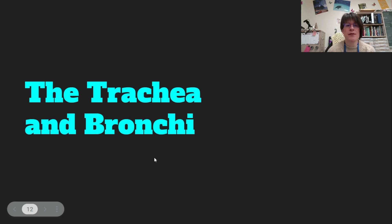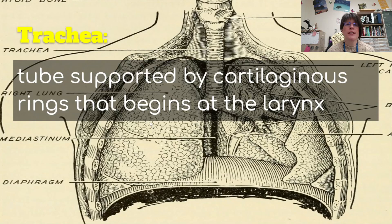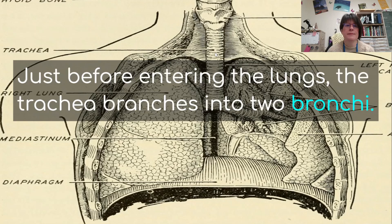Now let's talk about the trachea and bronchi. After air goes through the larynx, it goes into the trachea. This is a tube supported by cartilaginous rings that begins at the larynx, and it has those rings so that the tube does not collapse. Just before entering the lungs, the trachea branches into two bronchi — one goes to each lung. This is what gets all irritated, inflamed, and mucousy when you have bronchitis.